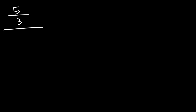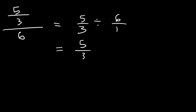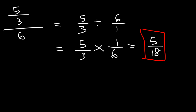Here's another similar example. Let's make this 5 divided by 3, and divide the whole thing by 6. Rewrite it as 5 over 3 divided by 6 over 1. Change division to multiplication by flipping the second fraction and multiply across: 5 times 1 is 5, and 3 times 6 is 18. So the answer is 5 over 18.